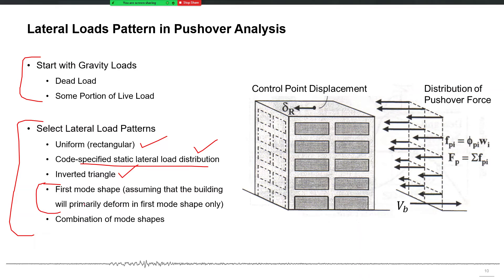But the most commonly used pattern is the first mode shape pattern, assuming that the building will primarily deform in the first mode shape only. You apply a load pattern which matches and is proportional to the first mode shape, so that it deforms the building in the first mode shape manner. We know that the maximum contribution of displacement comes from the first mode in the overall building response. We calculate that pattern proportional to the first mode shape, then apply it from a very low value, keeping on increasing its amplitude until the building is significantly yielded.